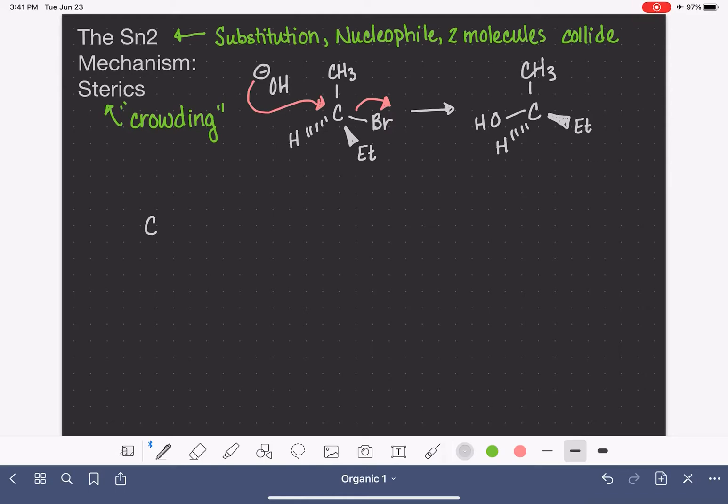So for example, if we have a carbon that has a leaving group, and then it just has a bunch of hydrogen attached to it, and hydrogen being the smallest atom and the smallest substituent that we could have, this carbon atom is going to be the most accessible to an incoming nucleophile because it only has teeny tiny things attached to it.